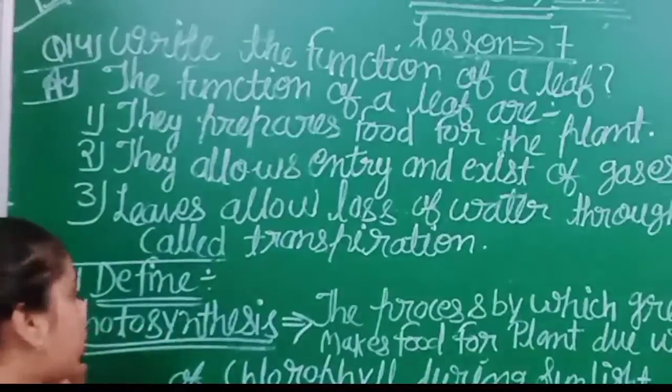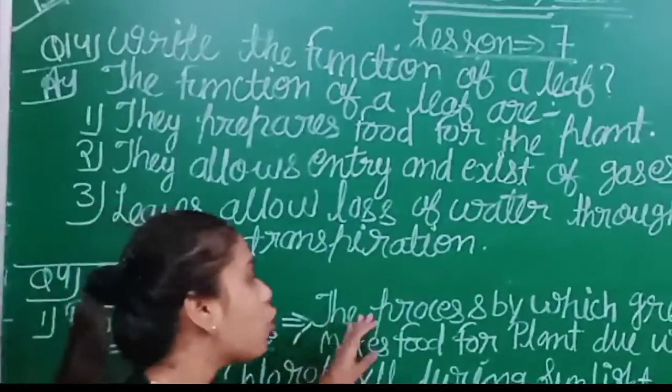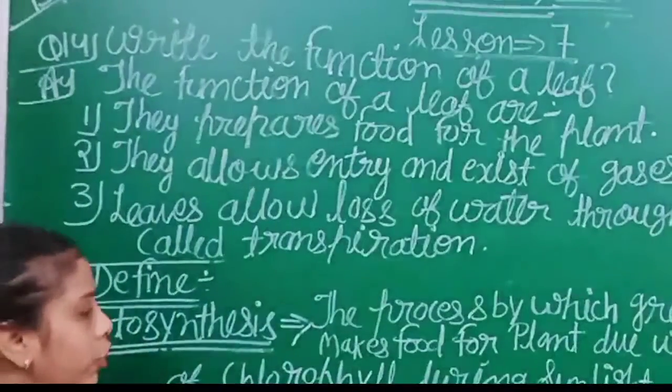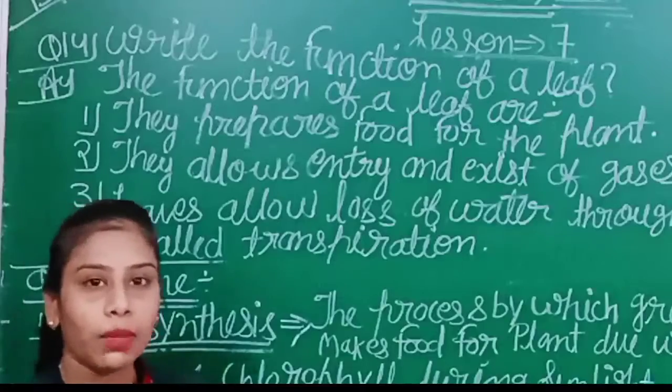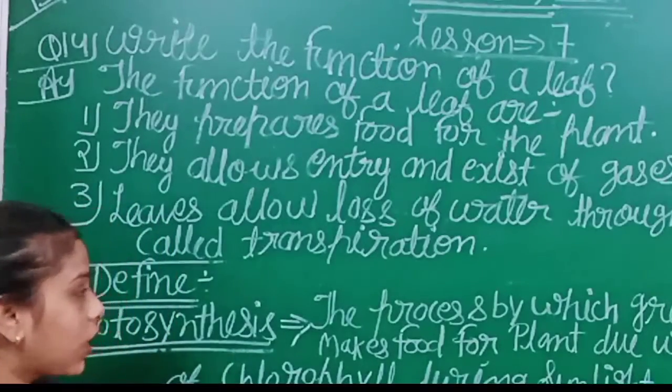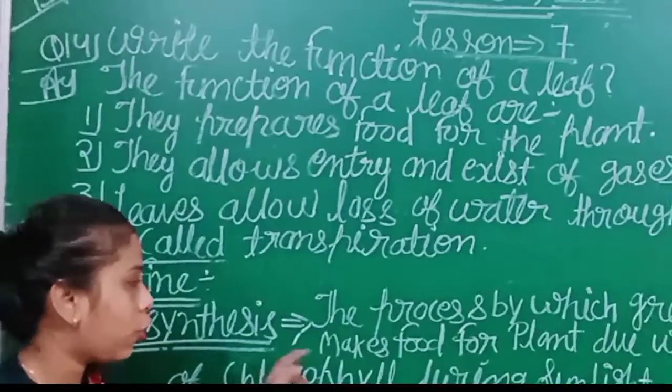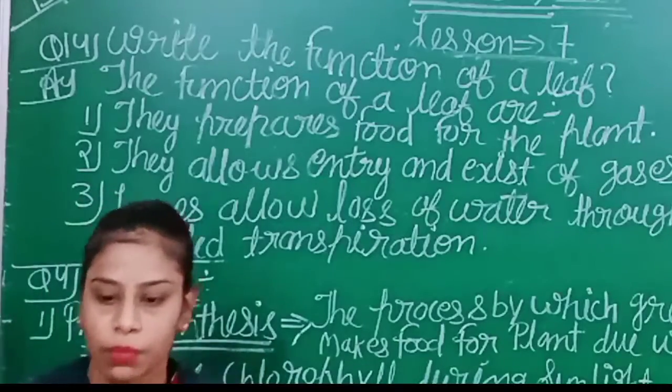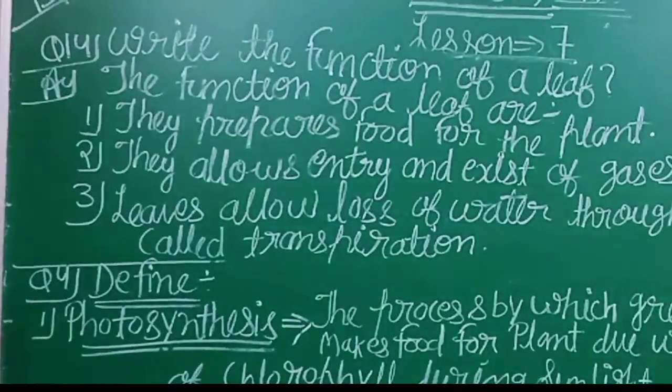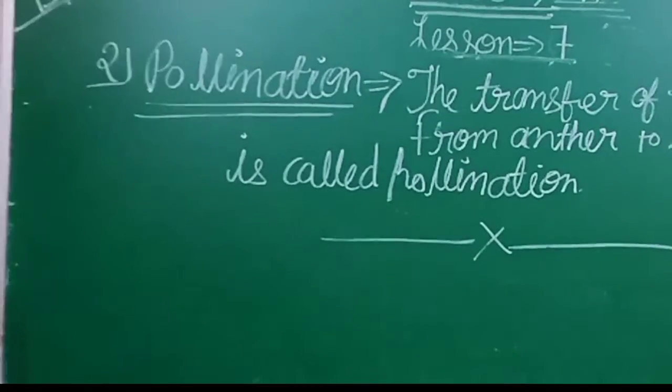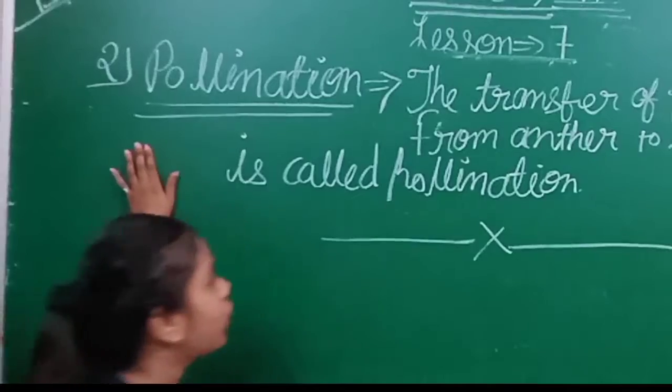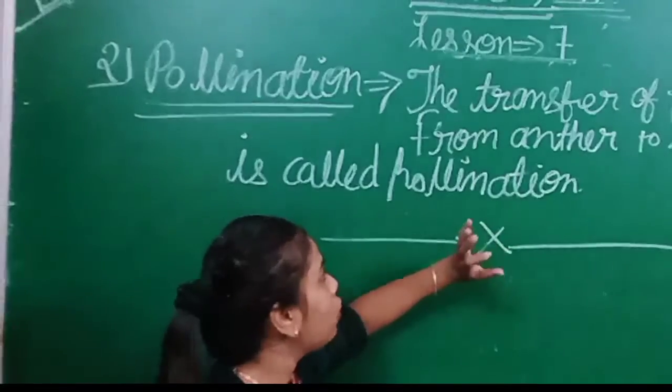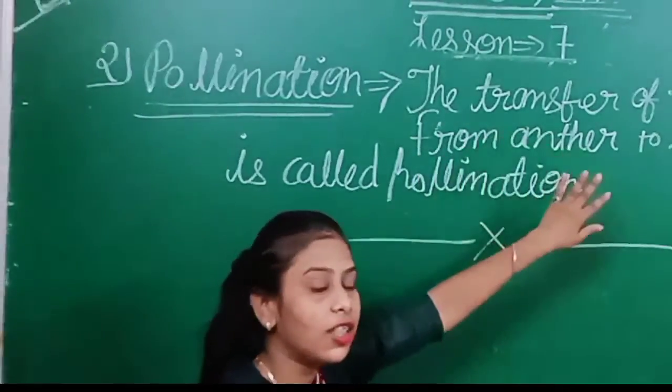Now question number one. The process is like this: we need to make food for plants. That is the process. The process by which the pollen is transferred from one flower to another is called pollination. The transfer of pollen from anther to stigma is called pollination.